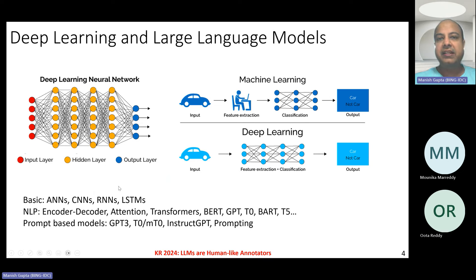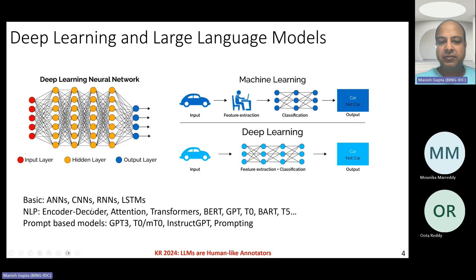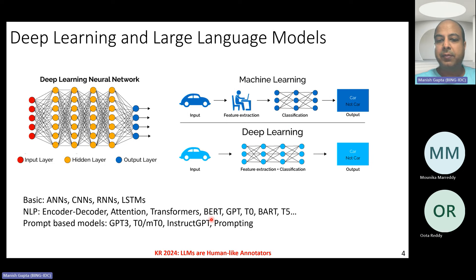Then in 2017, an interesting thing happened called transformers, which more or less changed the way people use deep learning models for knowledge reasoning and natural language processing. Before transformers, people were evolving RNNs and LSTMs into encoder-decoder models for generative use cases and attention-based models to mimic the human way of paying attention to different parts of the input while generating outputs. This attention mechanism led to the idea of transformers, which evolved into BERT, GPT, T0, BART, and T5 models. BERT is a pre-trained transformer encoder, GPT is a pre-trained transformer decoder, and T5 is a pre-trained transformer encoder-decoder.